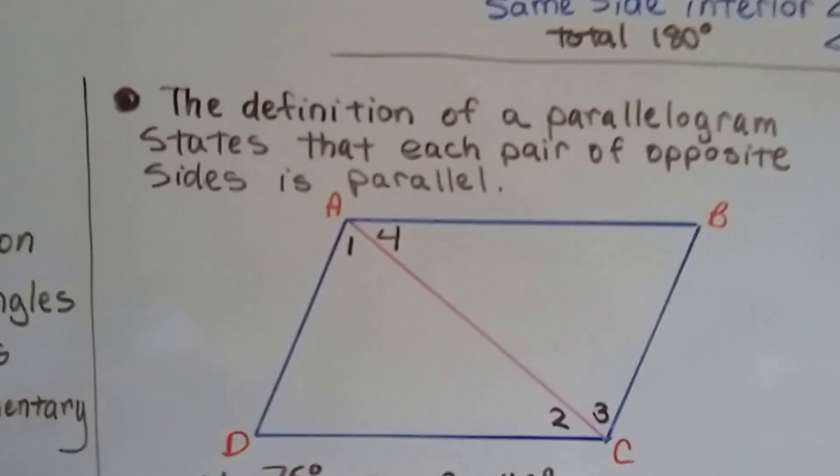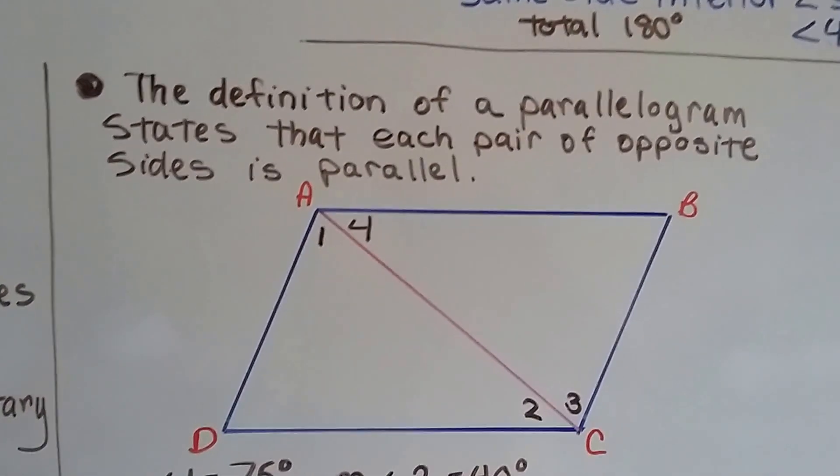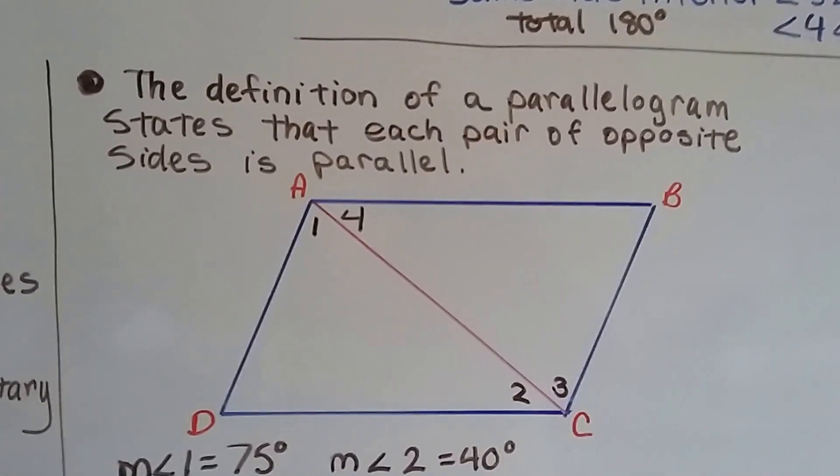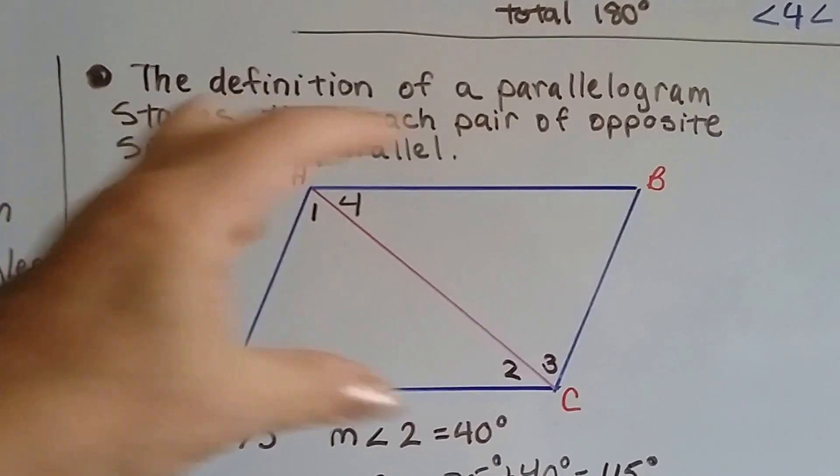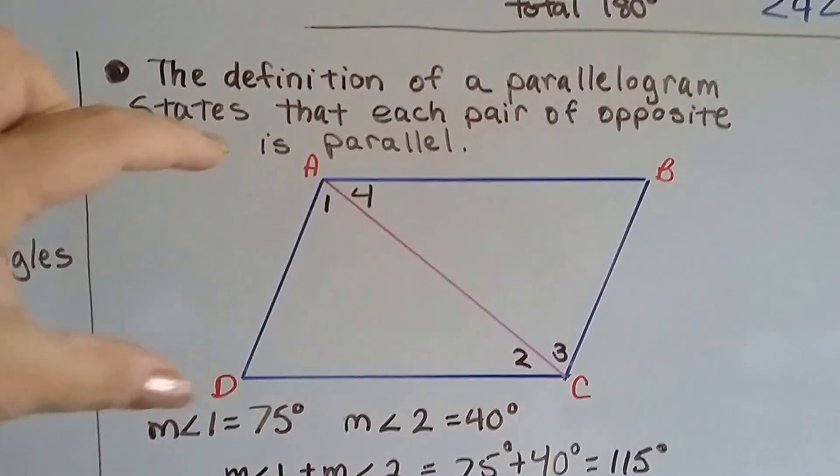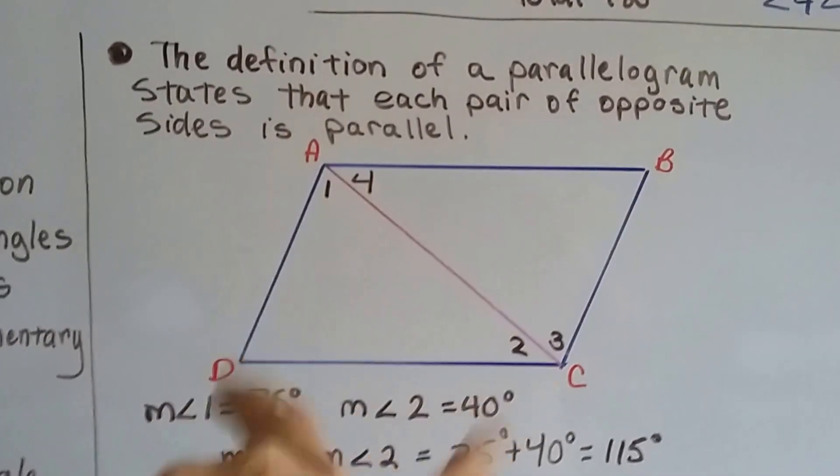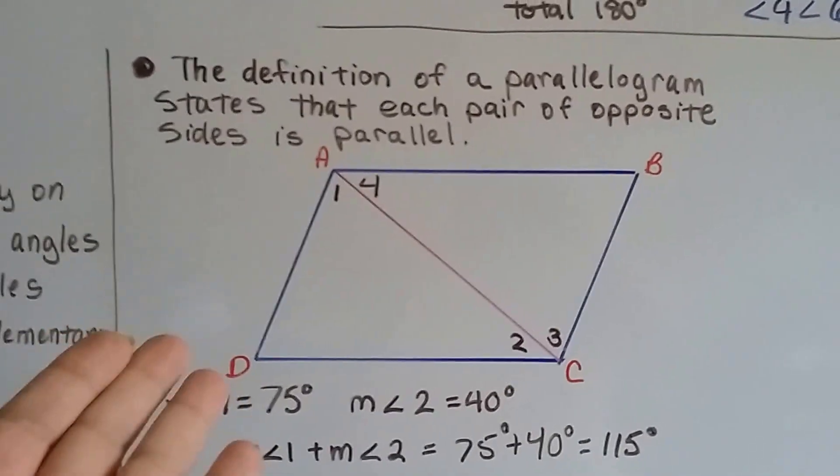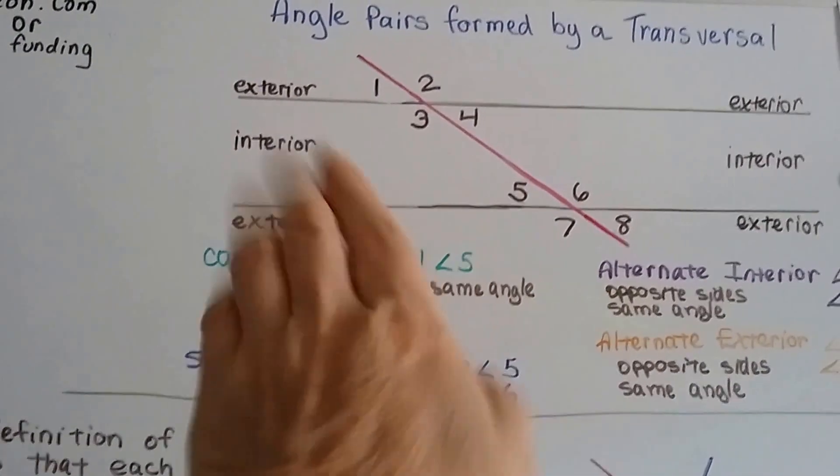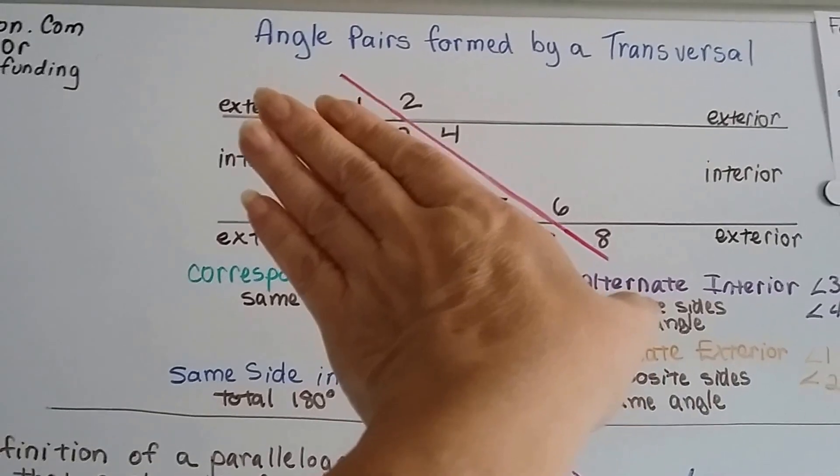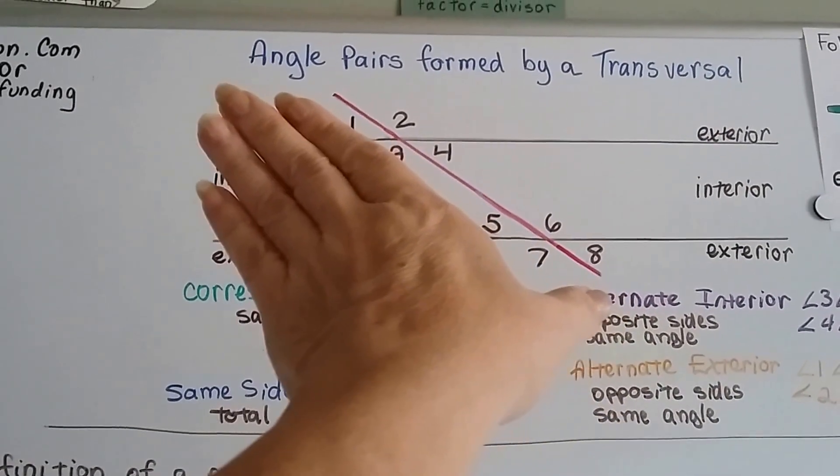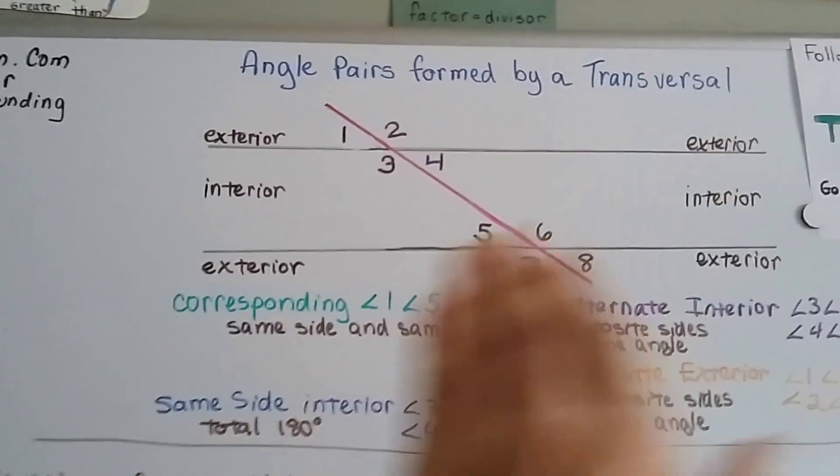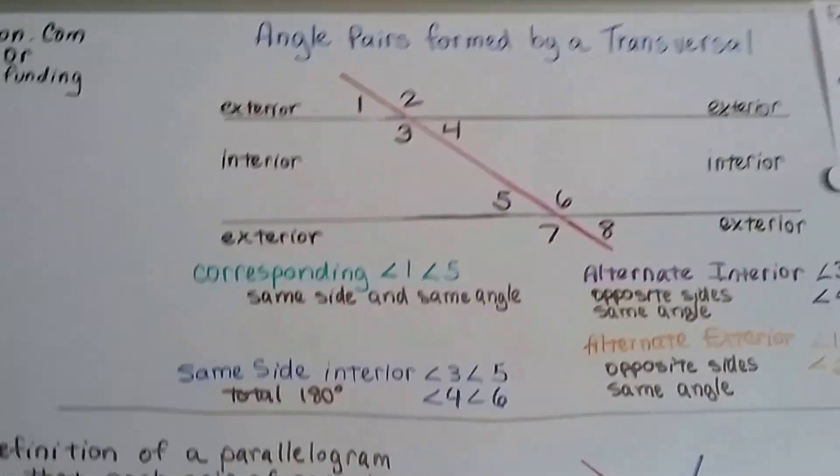So the definition of a parallelogram states that each pair of opposite sides is parallel. That's proof. That's a definition. See? So these two lines are parallel and these two lines are parallel. Now this can actually be like this. Just pretend we're taking off the edges here.